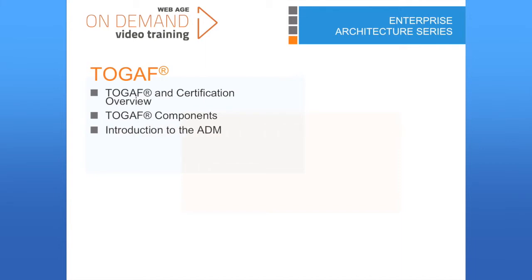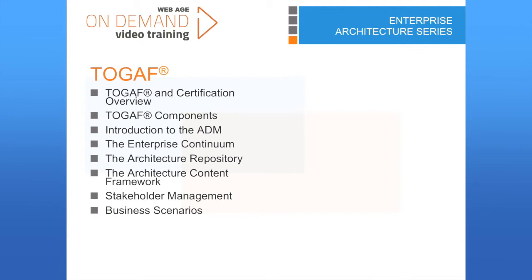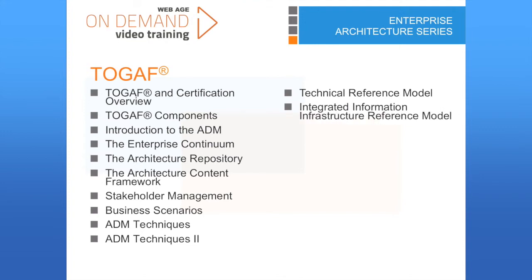Then we'll discuss some core concepts of TOGAF including the Enterprise Continuum, the Architecture Repository, and the Architecture Content Framework. After that, we'll focus on general architectural techniques like stakeholder management and business scenarios. The next two modules hone in on techniques used in the Architecture Development Method. TOGAF includes two optional but useful technical reference models, the TRM and the i3RM, and we have a module devoted to each of these.